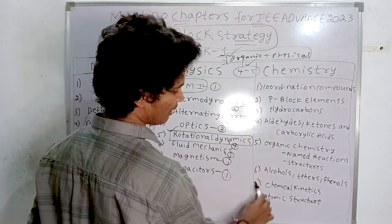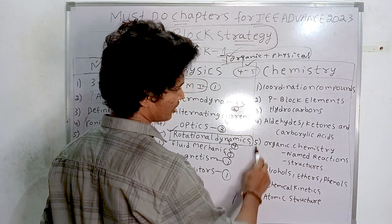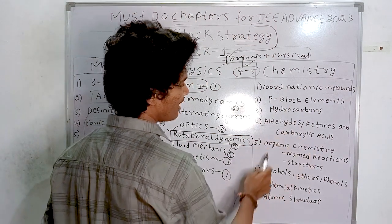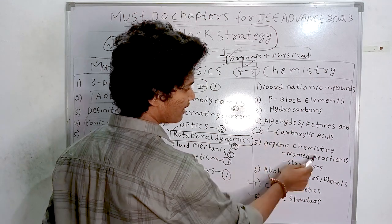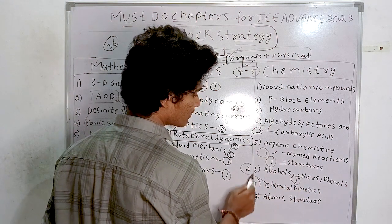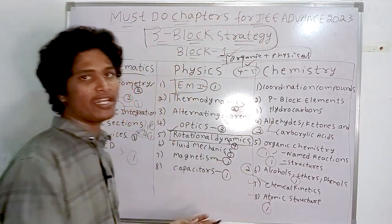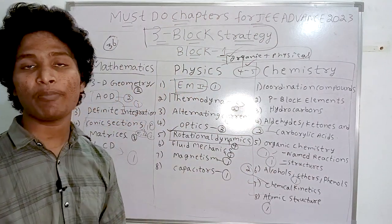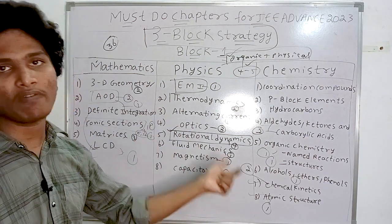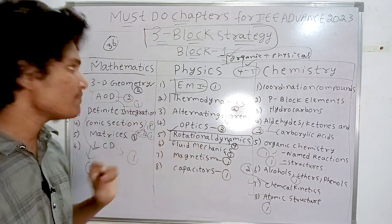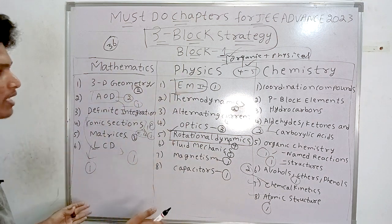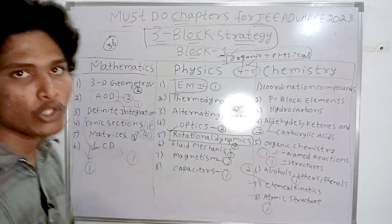Organic and physical chemistry weightage is both high, but they reduced individual section questions and created four to five mixed questions. Key block one chemistry chapters: chemical kinetics, atomic structure, coordination compounds, P-block, hydrocarbons, and aldehydes and ketones (two questions). You can expect at least one question from every block one chapter.